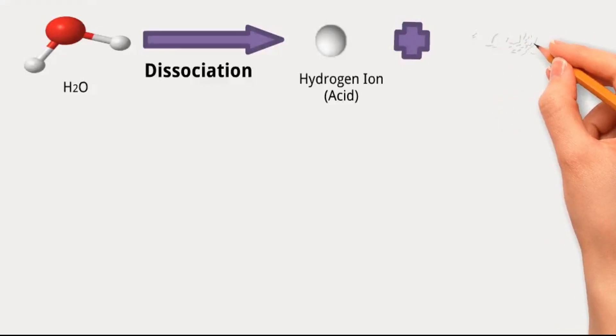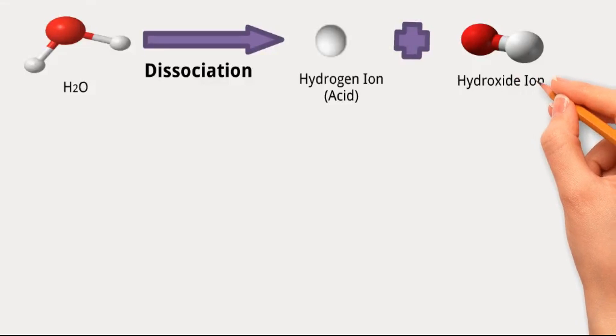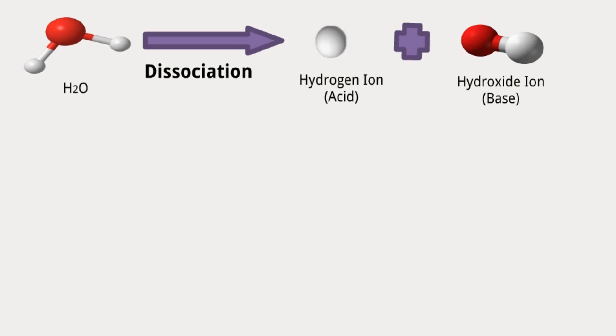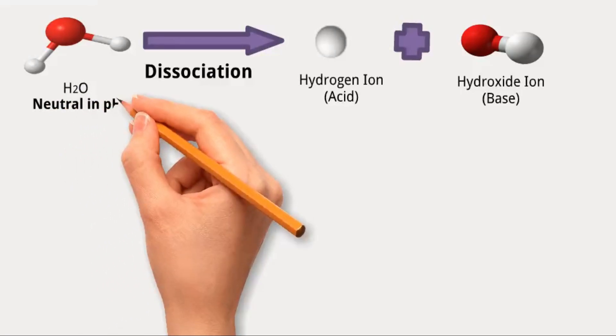The other part, consisting of the oxygen atom and the remaining hydrogen atom, forms a negatively charged ion known as hydroxide ion. And because water molecules can dissociate into hydrogen ions and hydroxide ions, they are considered neutral in pH.